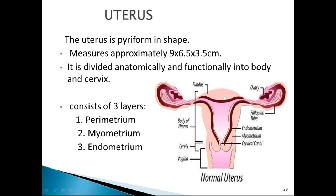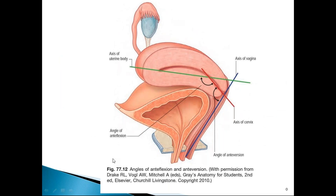The uterus is a piriform-shaped internal reproductive organ. It is divided into corpus or body and cervix. It consists of three layers: perimetrium, myometrium, and endometrium. This is the anatomical position of the uterus.